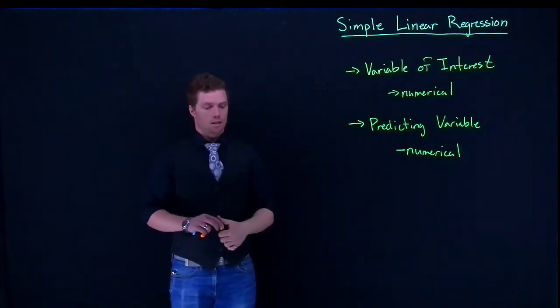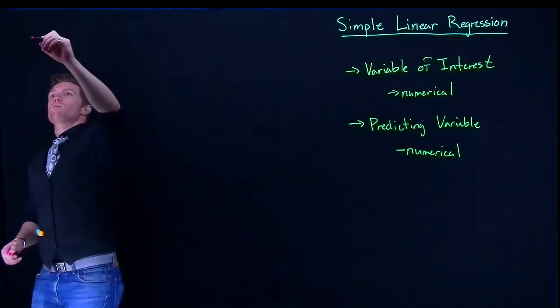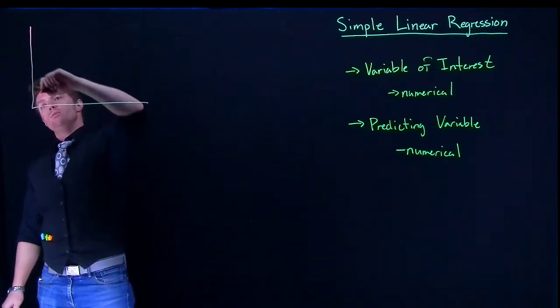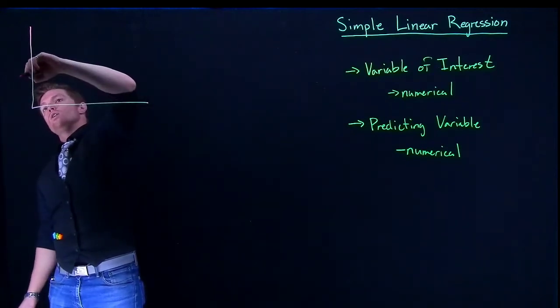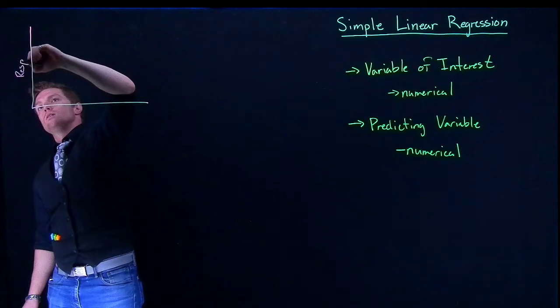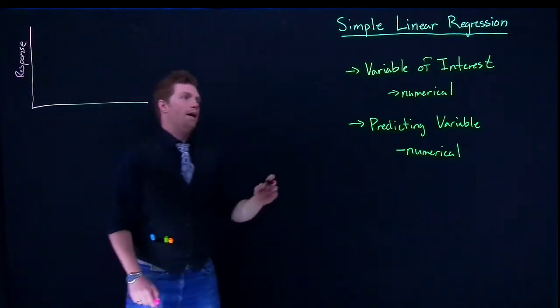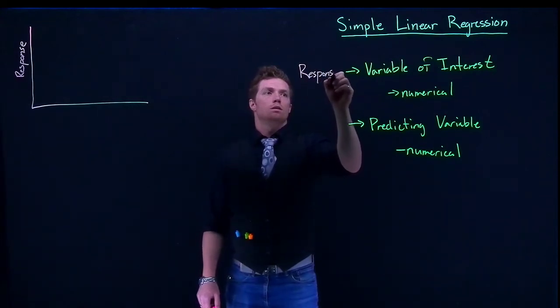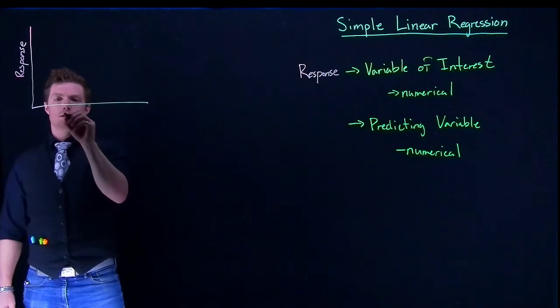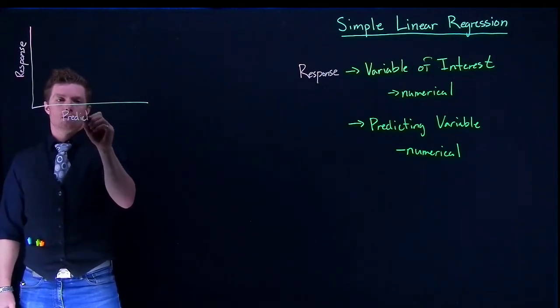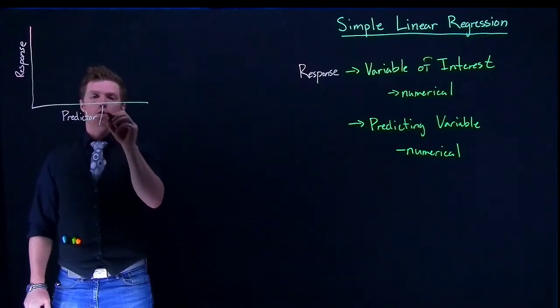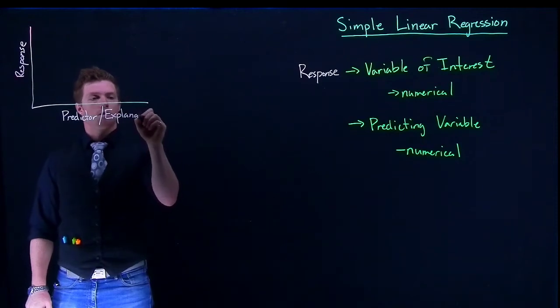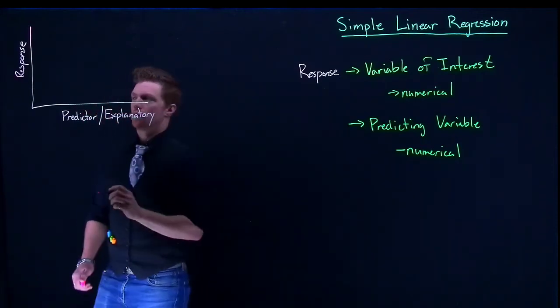What we see these a lot is done with scatter plots. We would put our variable of interest, or this is also called our response, on our y-axis. We'll put this right here as response. And this is our predictor slash explanatory, our explanatory variable.